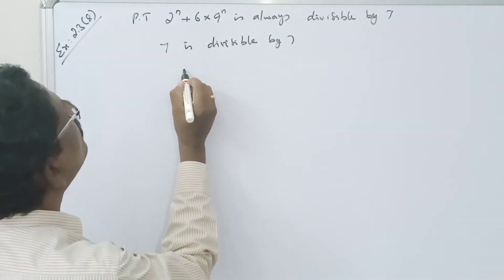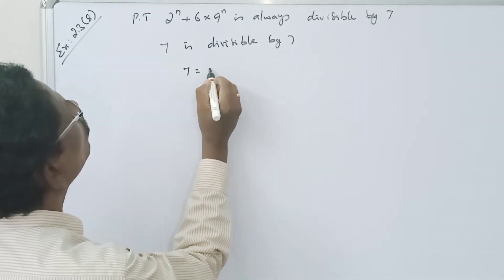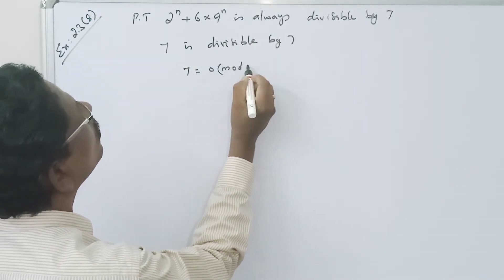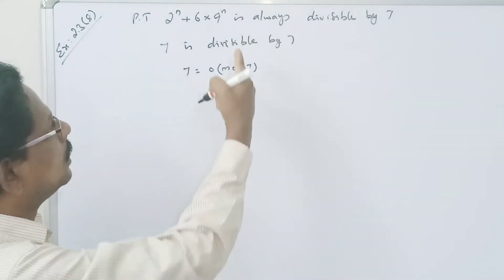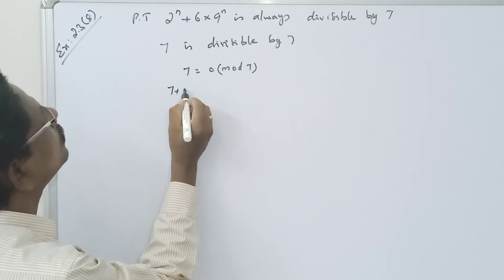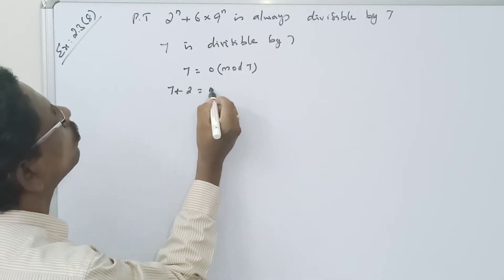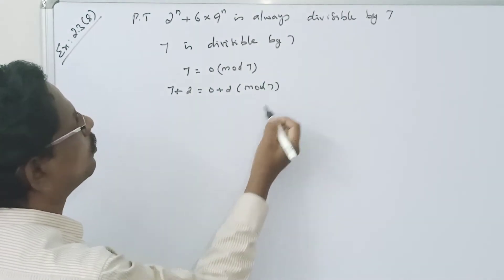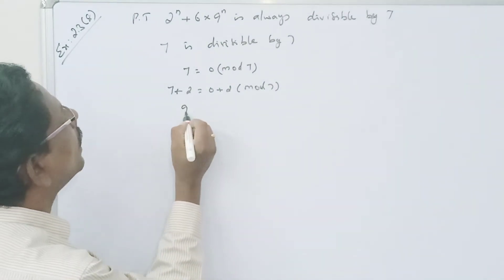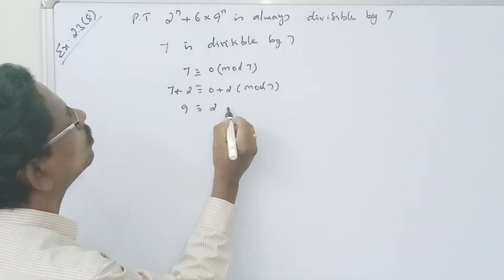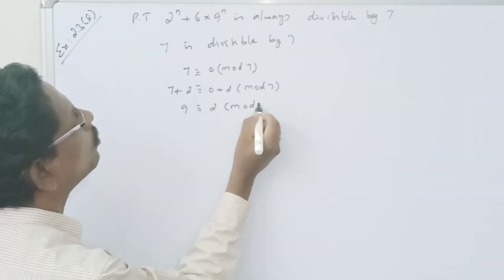So 7 equals 0 mod 7. We know that 7 plus 2 equals 0 plus 2 mod 7. So 9 is congruent to 2 mod 7.